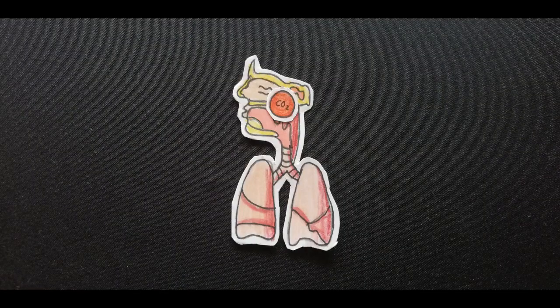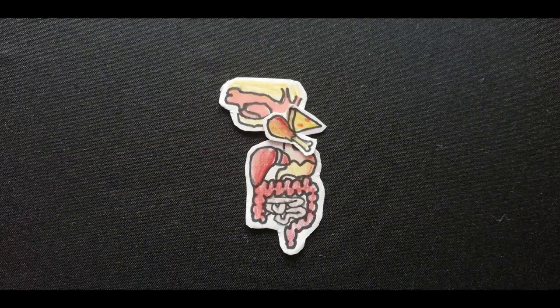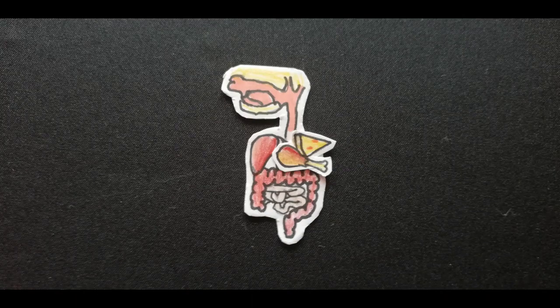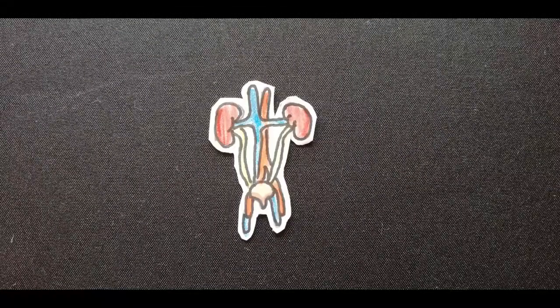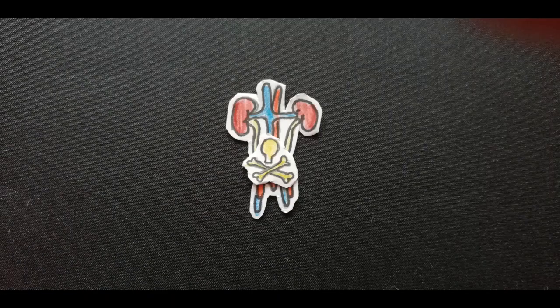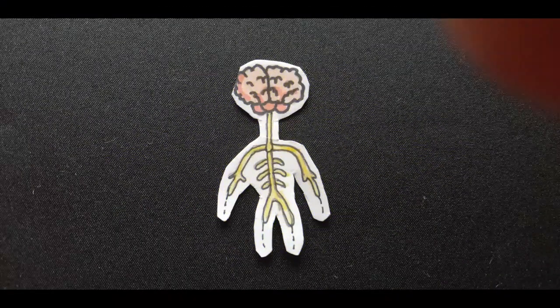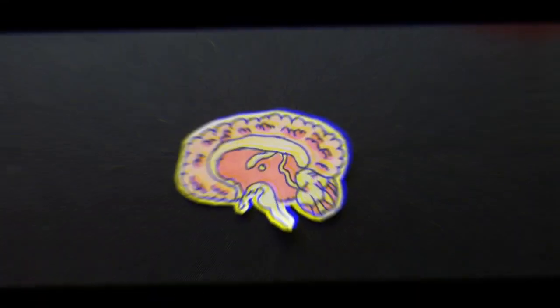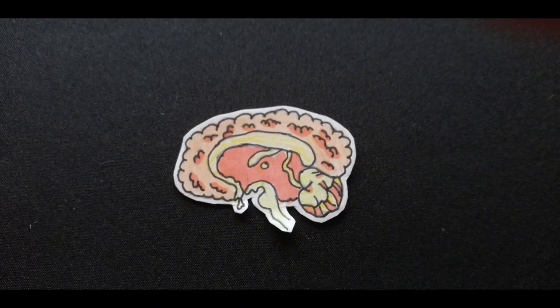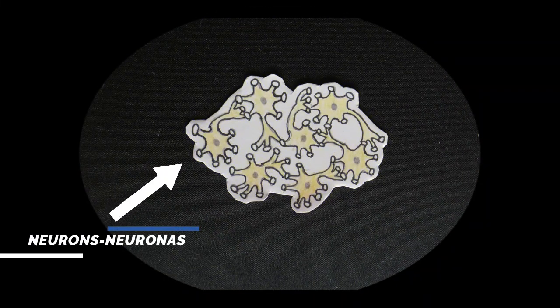The digestive system is a group of organs that processes the food we eat and removes unnecessary waste. The urinary system is in charge of cleaning the blood and releasing waste through your pee. The nervous system controls every activity of our body through the brain, which is made of special cells called neurons that control every part of the body.